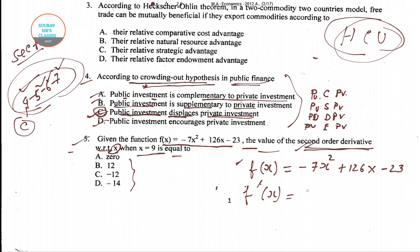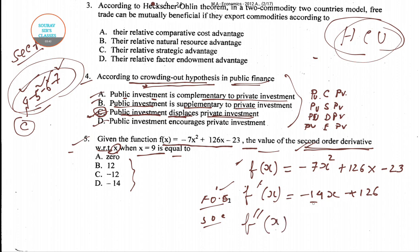The first order differentiation gives us minus 14x, since 2 into 7 becomes 14 and the power reduces by one, plus 126. So f'(x) equals minus 14x plus 126. After differentiating again for the second order, we get f''(x) equals minus 14, since there is only the x term remaining.